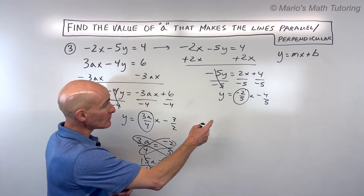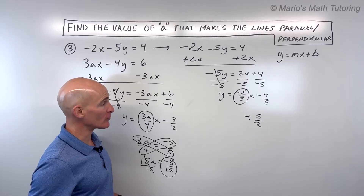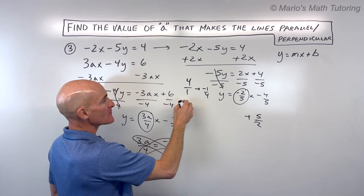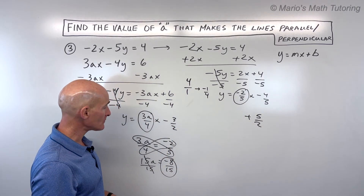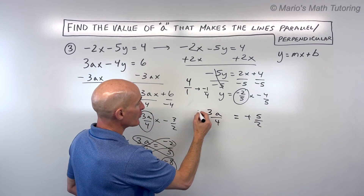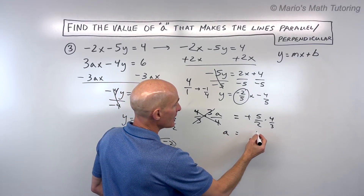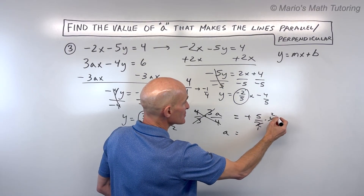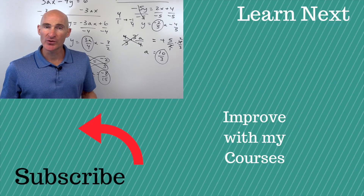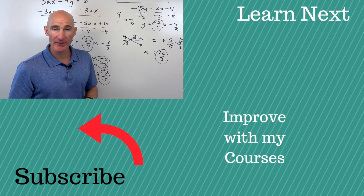For perpendicular lines, we need the opposite reciprocal of −2/5. Opposite means positive, and flipping gives 5/2. So we set 3a/4 = 5/2. Multiplying both sides by 4/3 cancels the 4s and 3s on the left, leaving a. On the right, cross-reducing gives 10/3. So a = 10/3 — that's the value that makes the lines perpendicular. Great job working through all three examples! For more practice on equations of parallel and perpendicular lines, check the related video linked here.